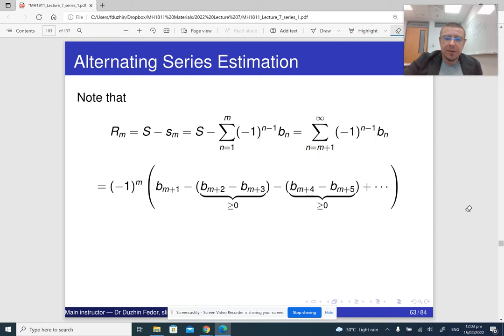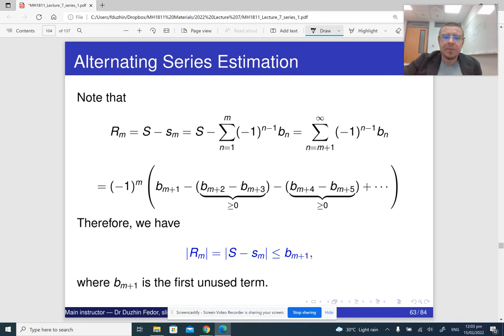And applying the absolute value, we see that the absolute value of the error, so the error itself can be positive or negative, because when we use a partial sum to estimate our series, we don't know whether the partial sum is bigger or smaller than the actual sum of the entire series. But the absolute value of the error is less than or equal to the next term, the first unused term, basically.